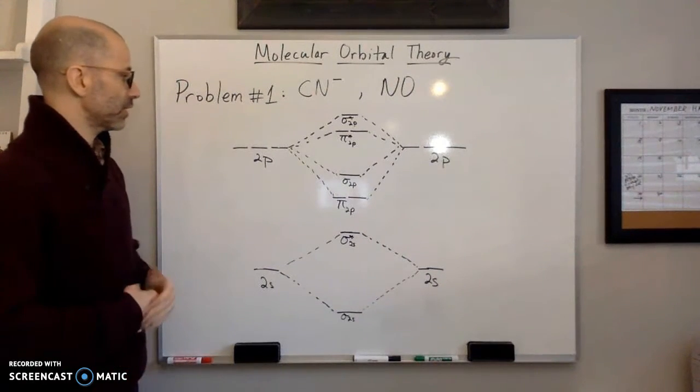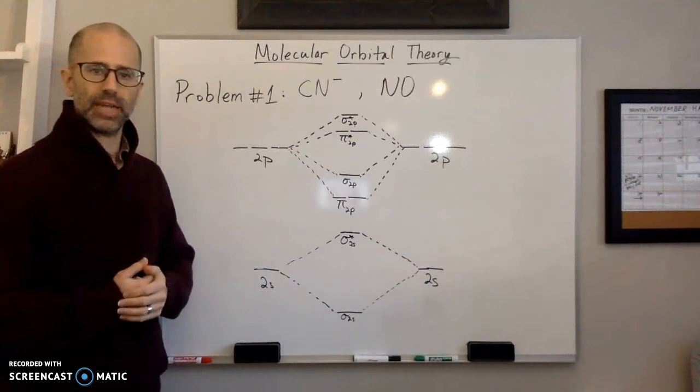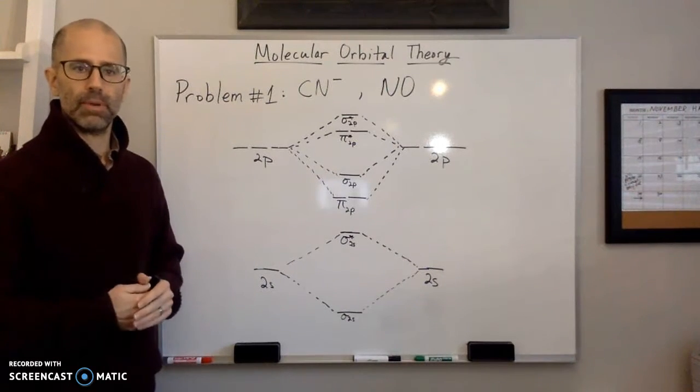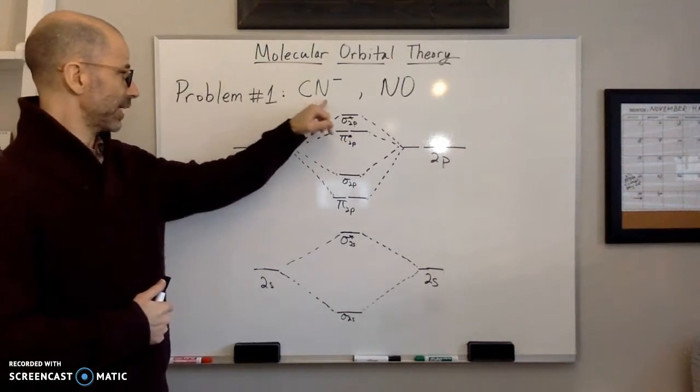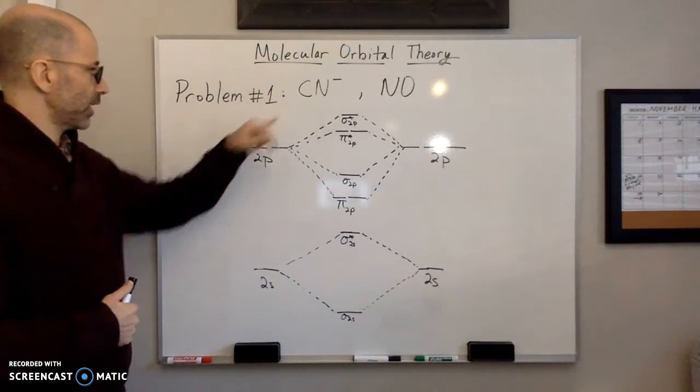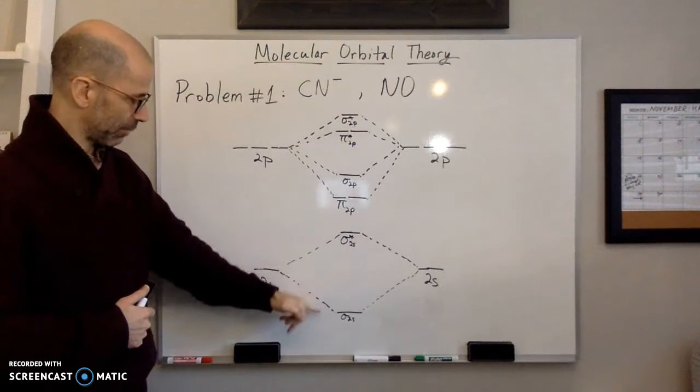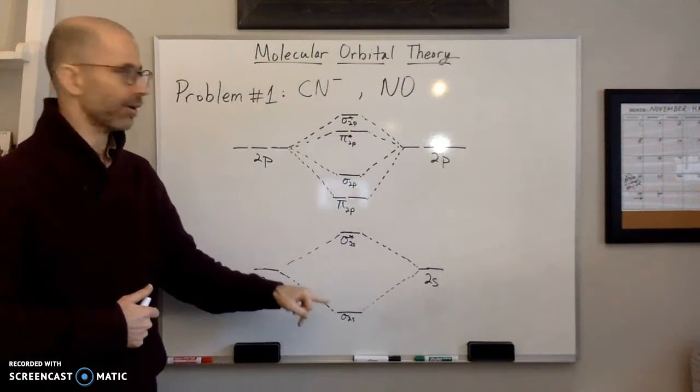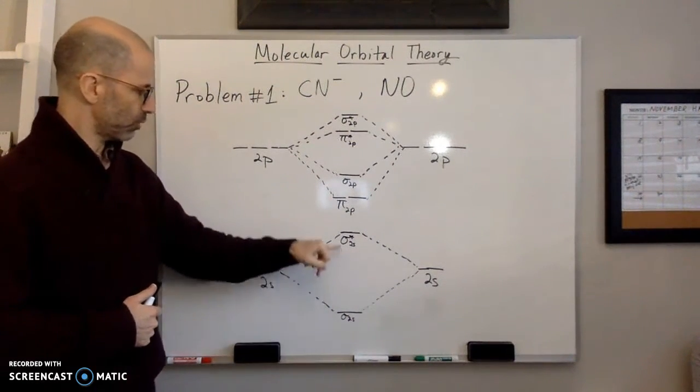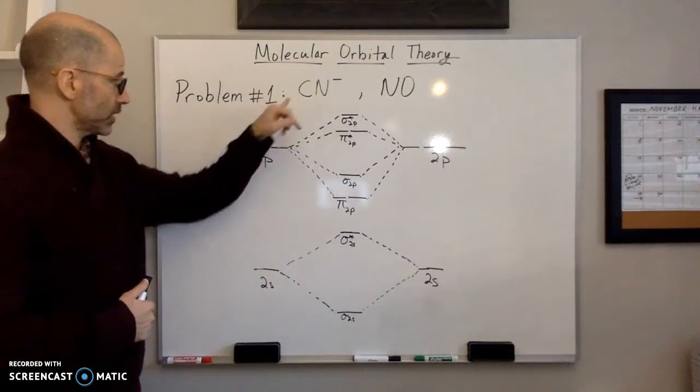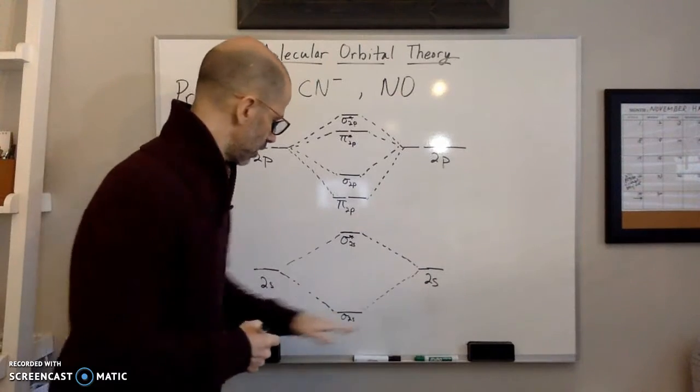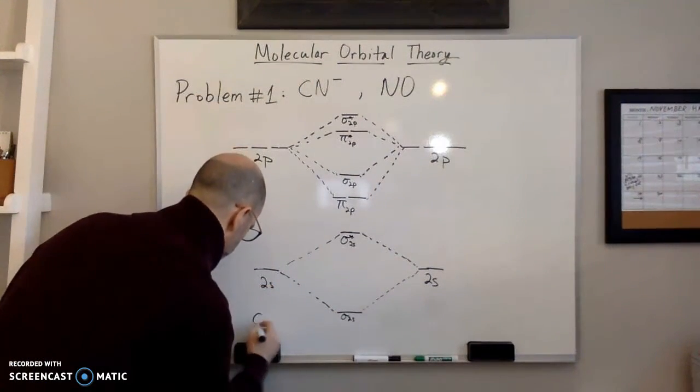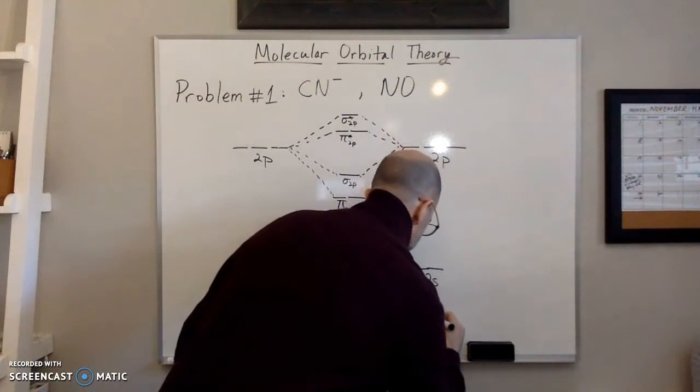So in this regard everything is pretty much the same, you just have to know what orbital diagram to use. And so we'll start with CN minus. Both C and N have the same orbital diagram. So this is the one we're going to use for CN minus. So again you're going to have to put the atoms on the side. So we'll make this one carbon and this one nitrogen.